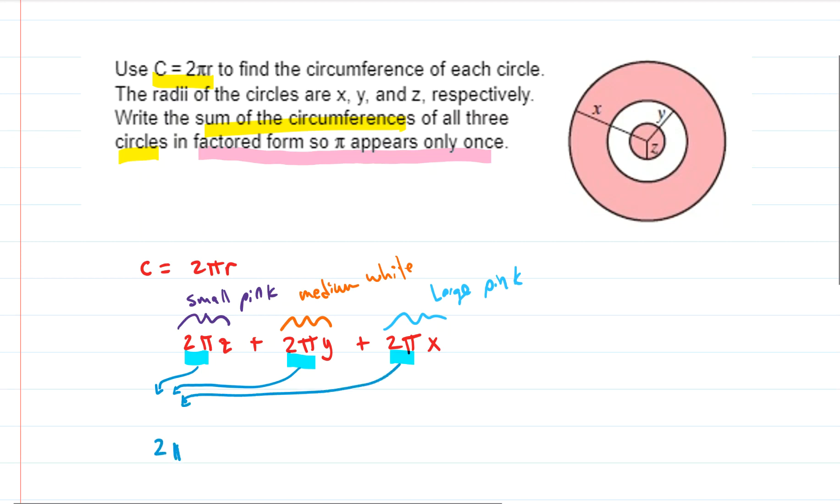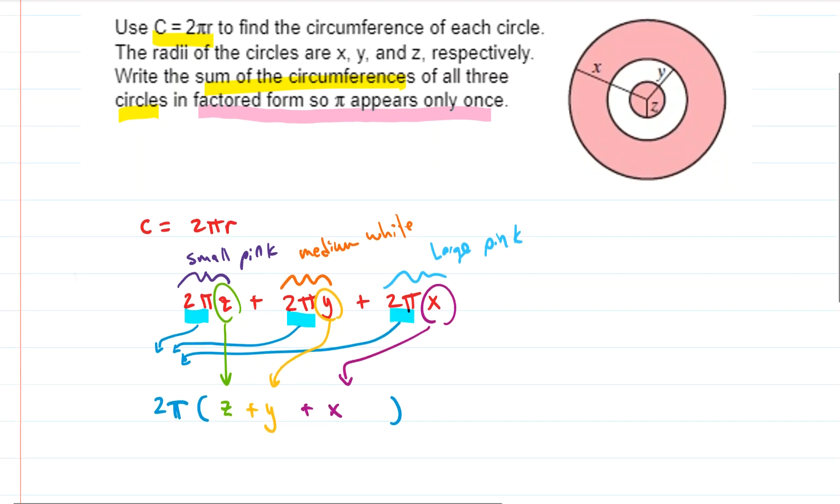So if we took 2π out, what would be left? Well, we'd have a z from the first term, we would have a y from the second term, and we would have an x from the third term.